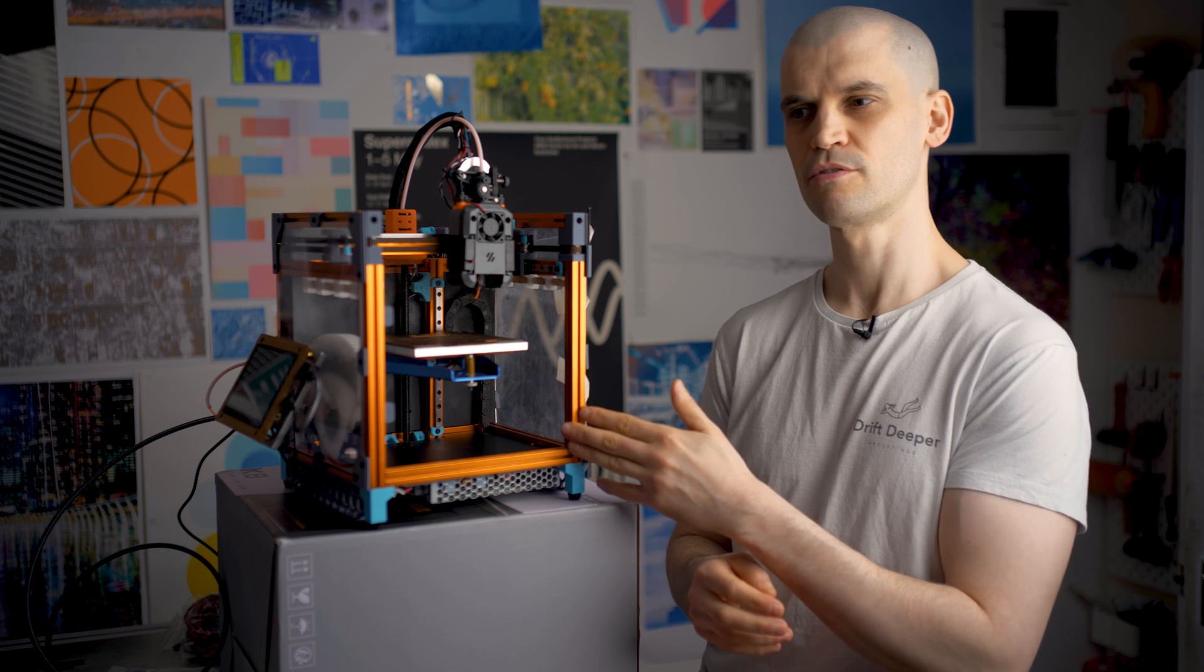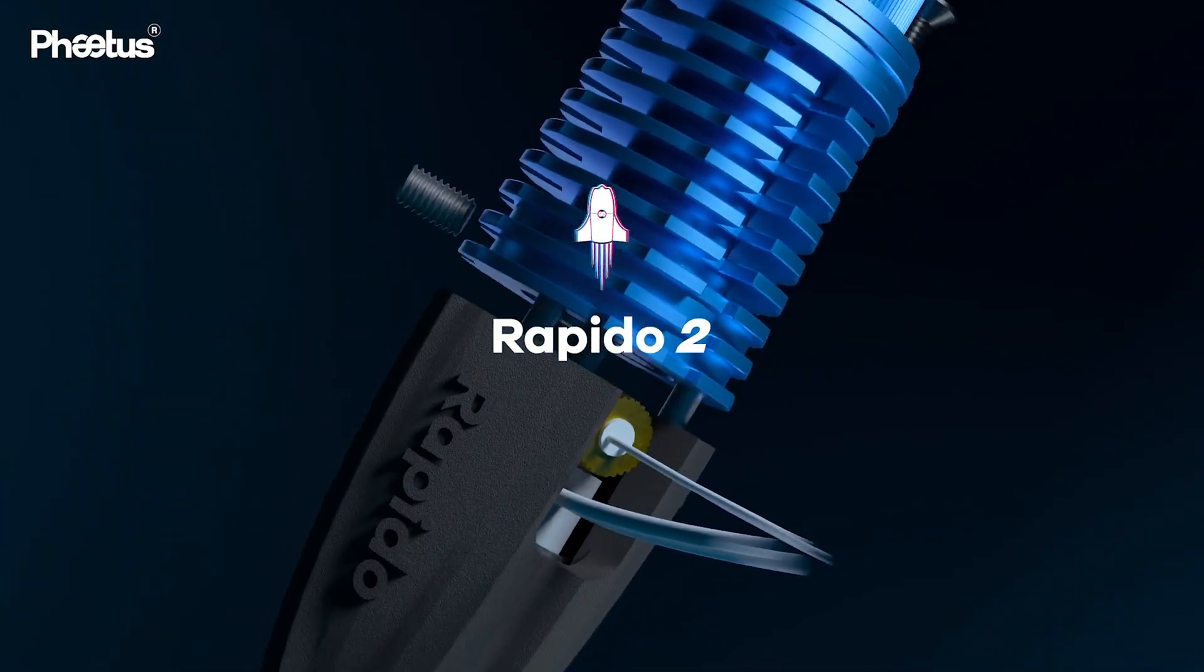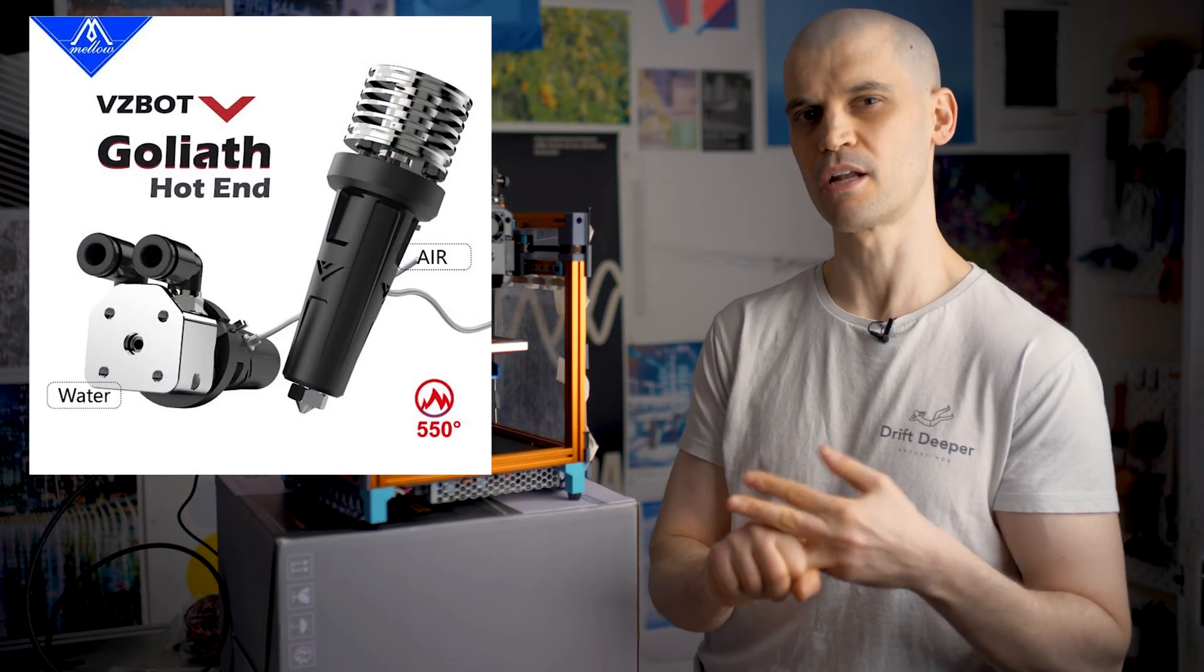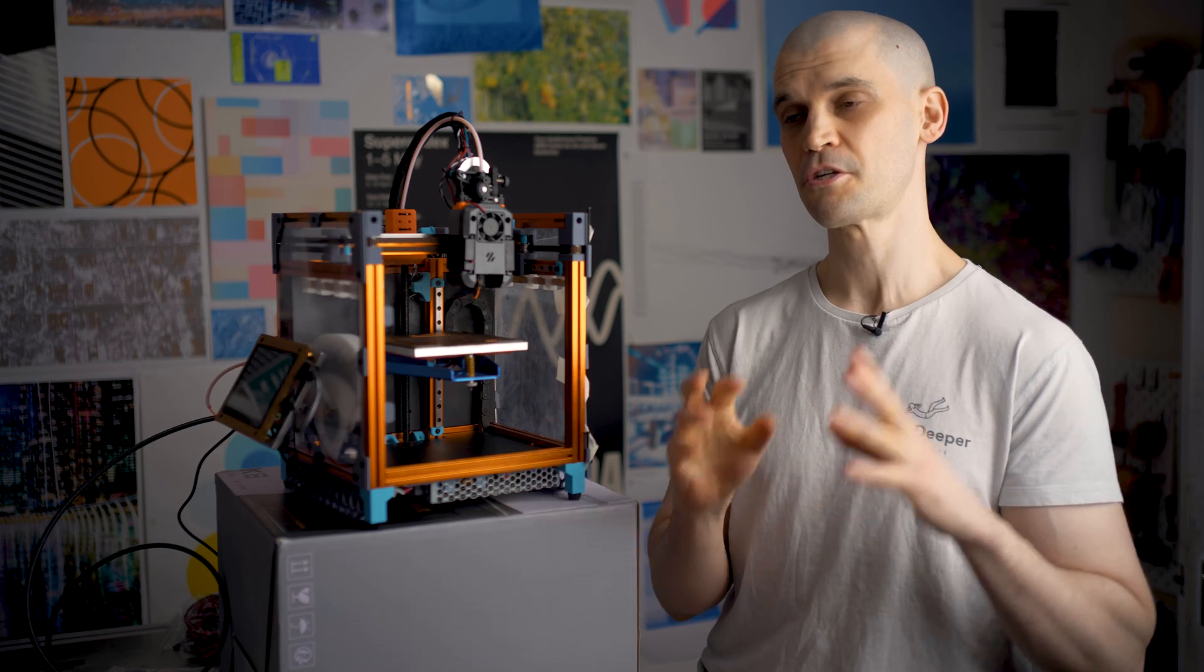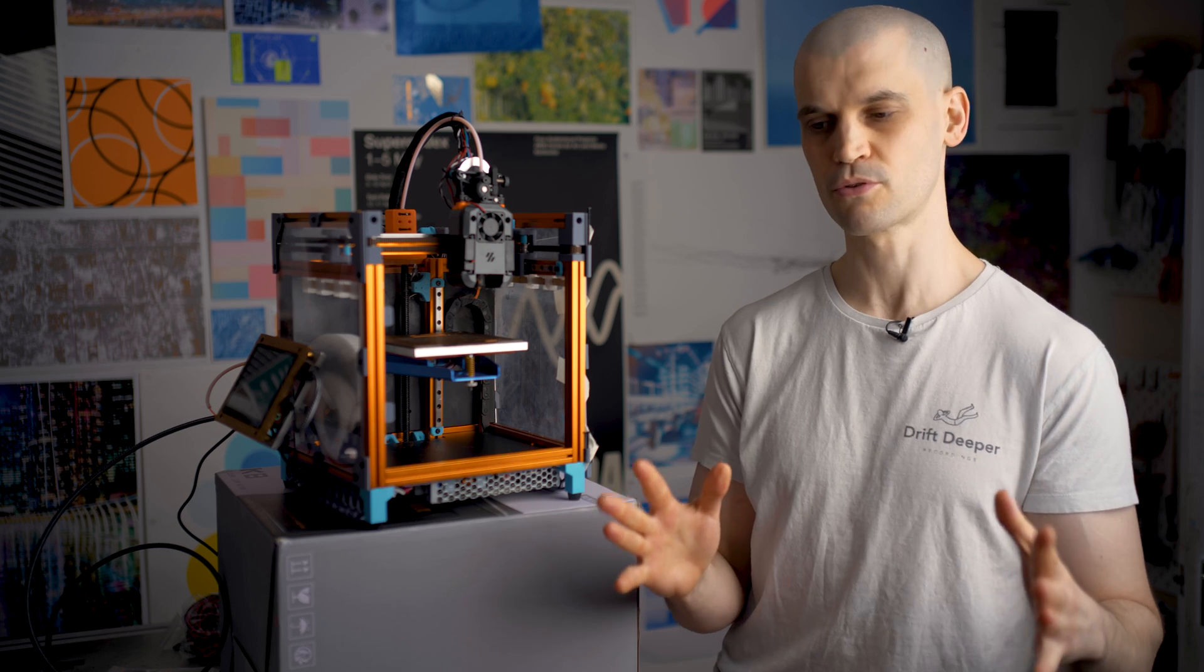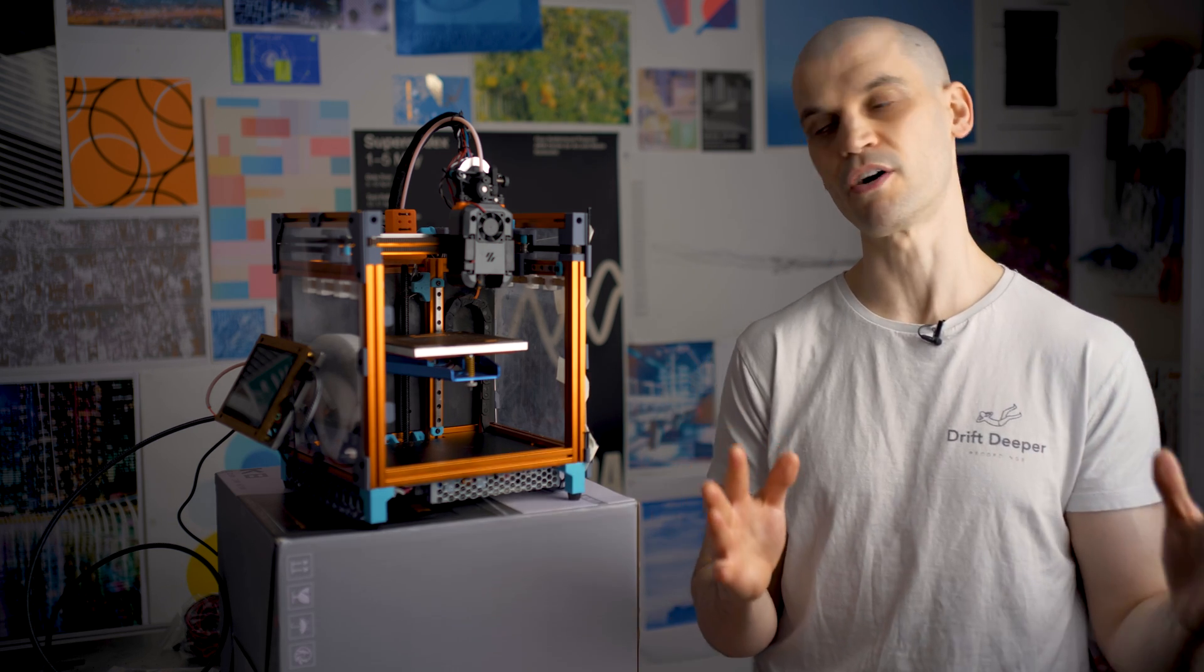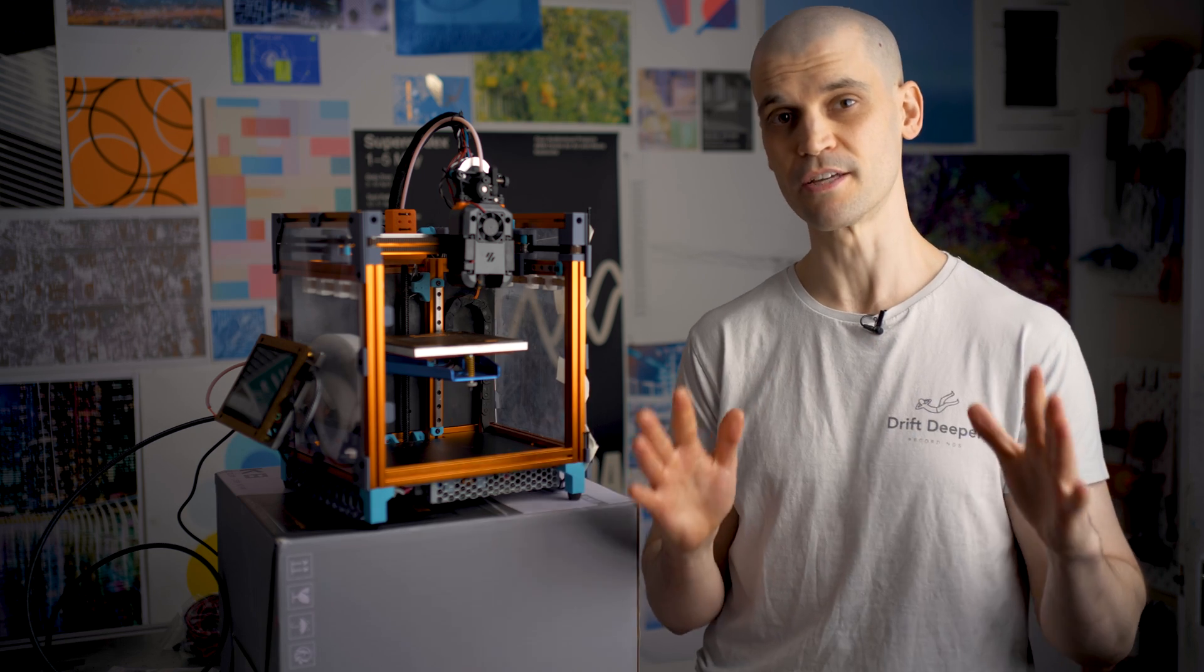With the Voron Zero you've got a few options for high flow hotends. The Rapido, you've got the Goliath and then also maybe something like the Slice Engineering. Now I was actually turned off of using Slice Engineering's products because there was a whole drama between Goliath hotend and Slice Engineering and people trying to sue each other. You can make up your own mind if you just have a quick search on Google.